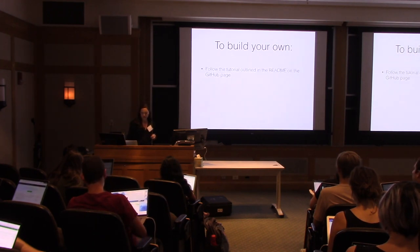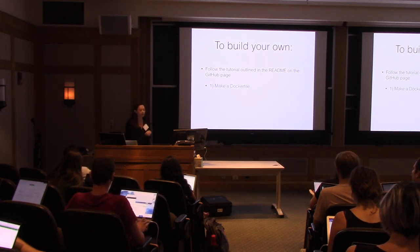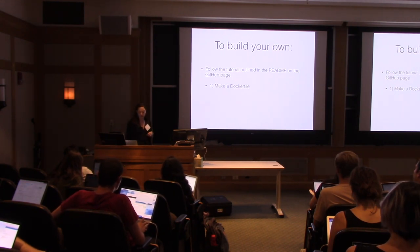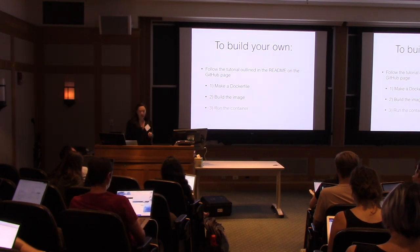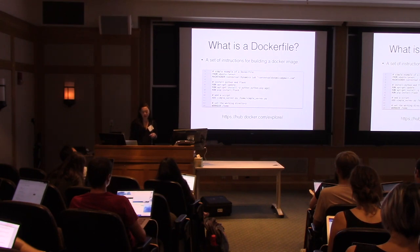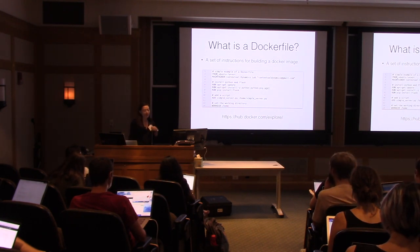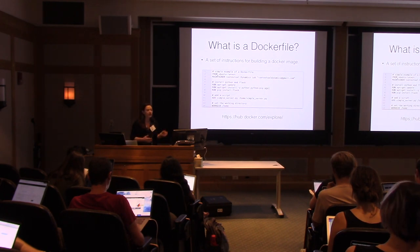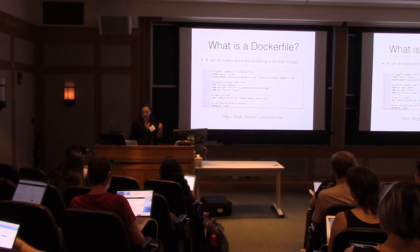To build your own, you could follow the tutorial outlined in the readme on the GitHub page. But it really boils down to three steps. First, you make a Dockerfile, which is really just a text file. Then you build an image from that Dockerfile, and then you run a container from that image. This Dockerfile is 14 lines long. The key thing to point to is the FROM statement at the top — this is called a base image, basically a Docker-approved pre-built image, and the rest is just layers on top of that. You can explore other base images that Docker provides at this link.